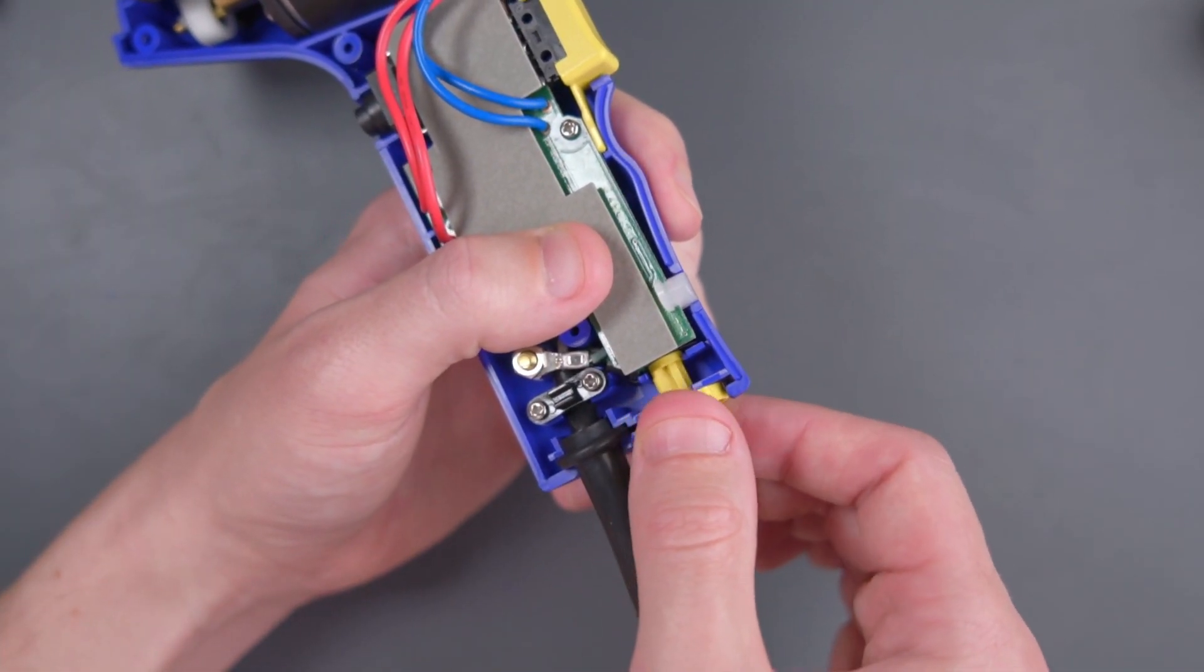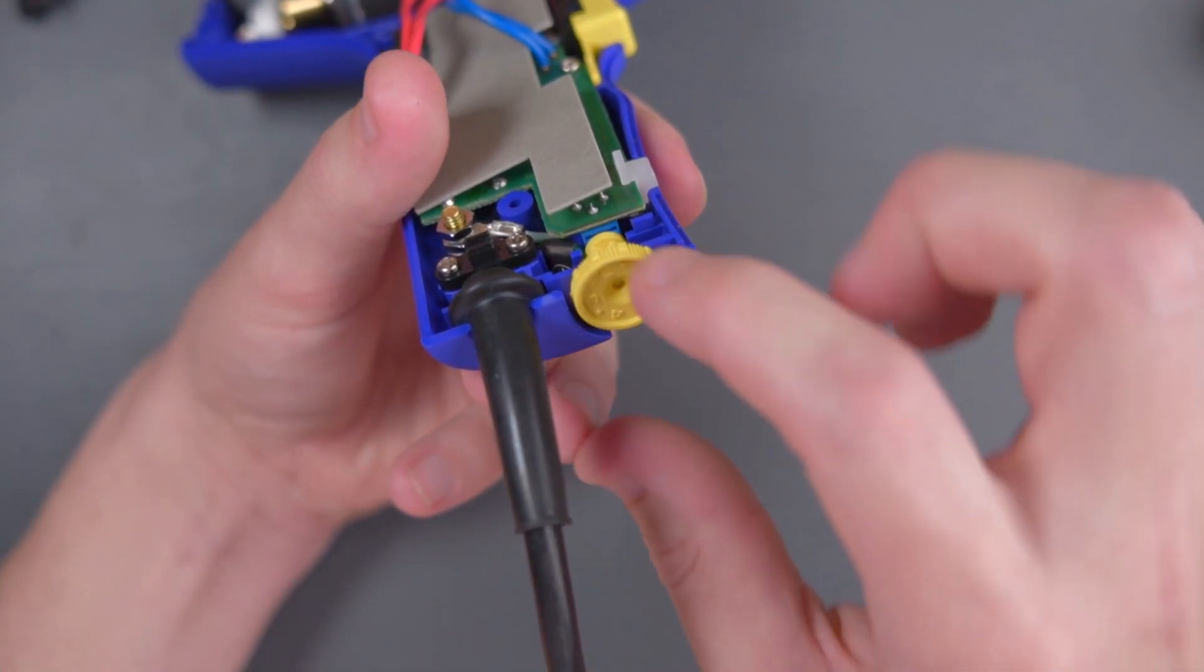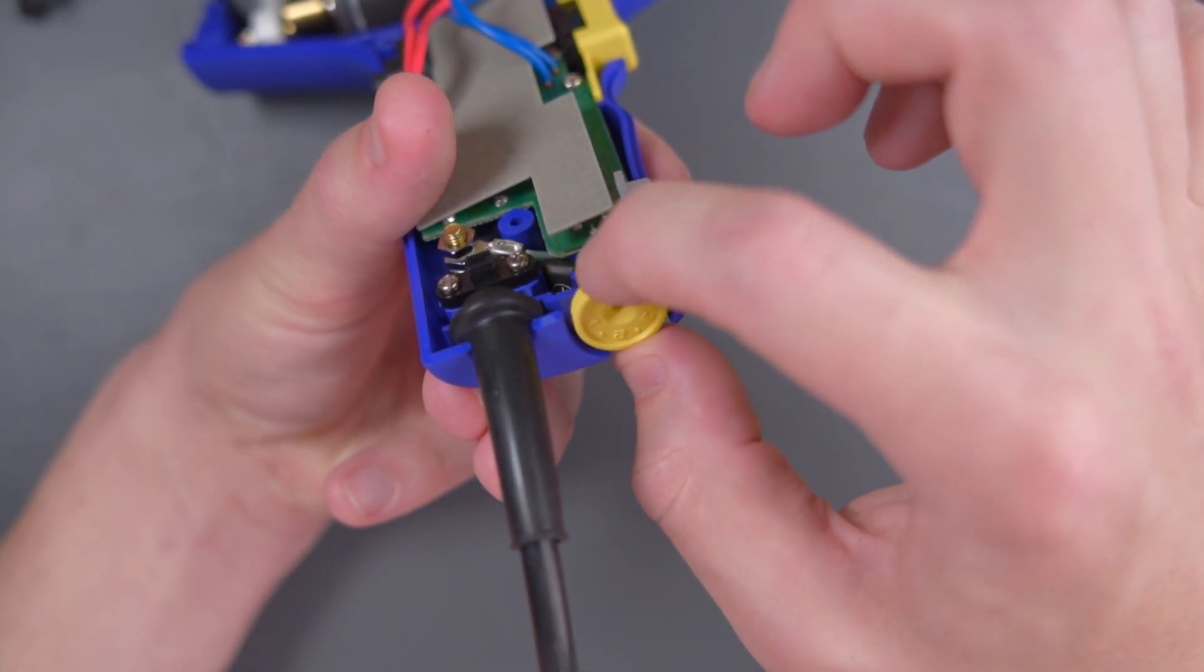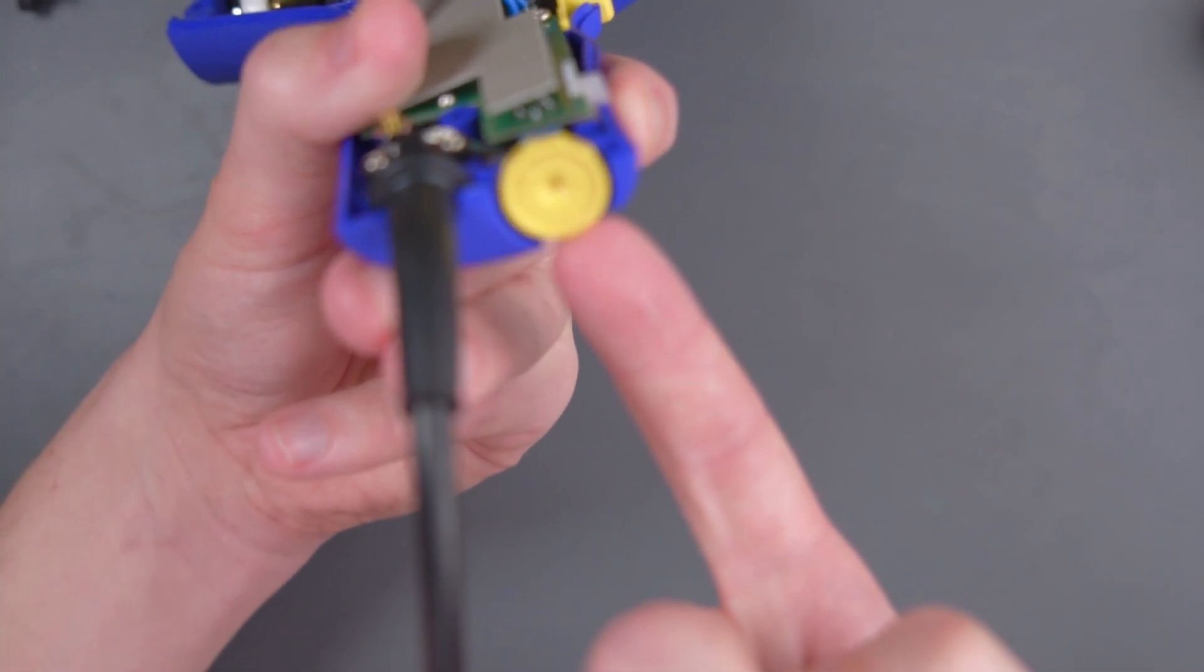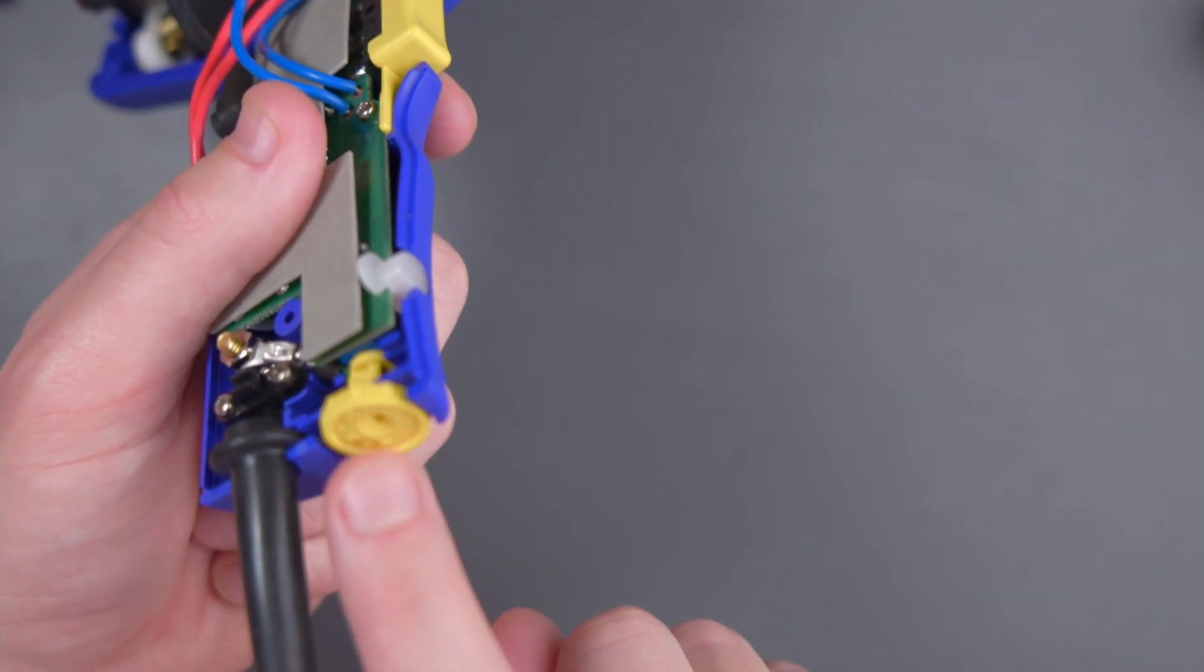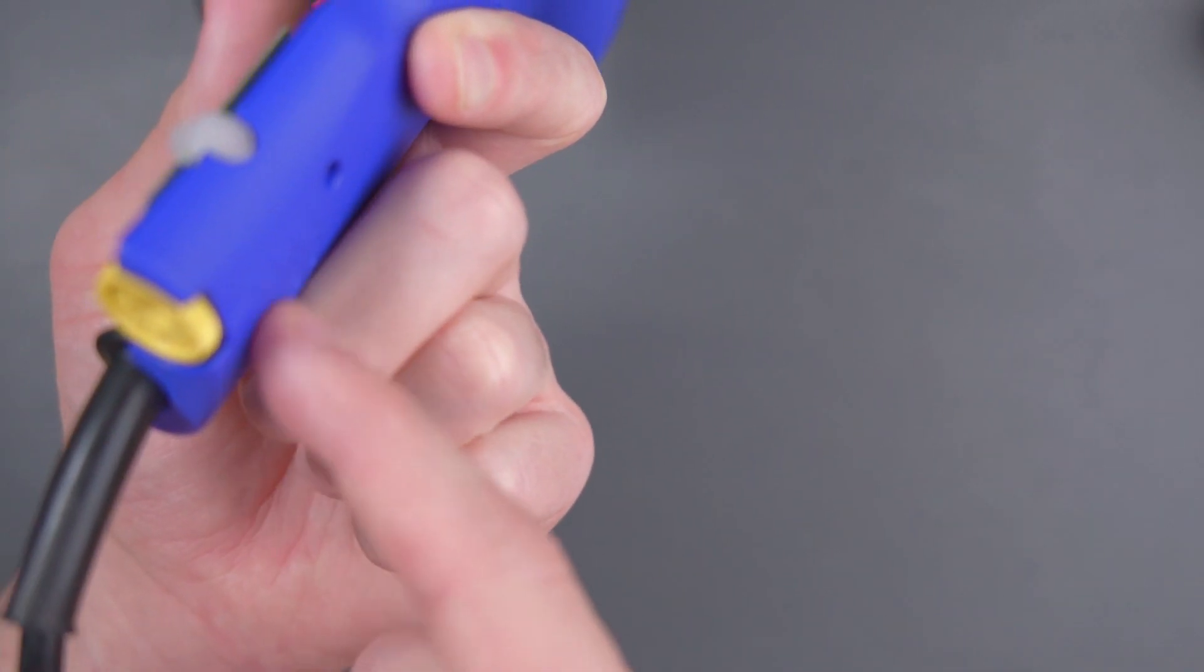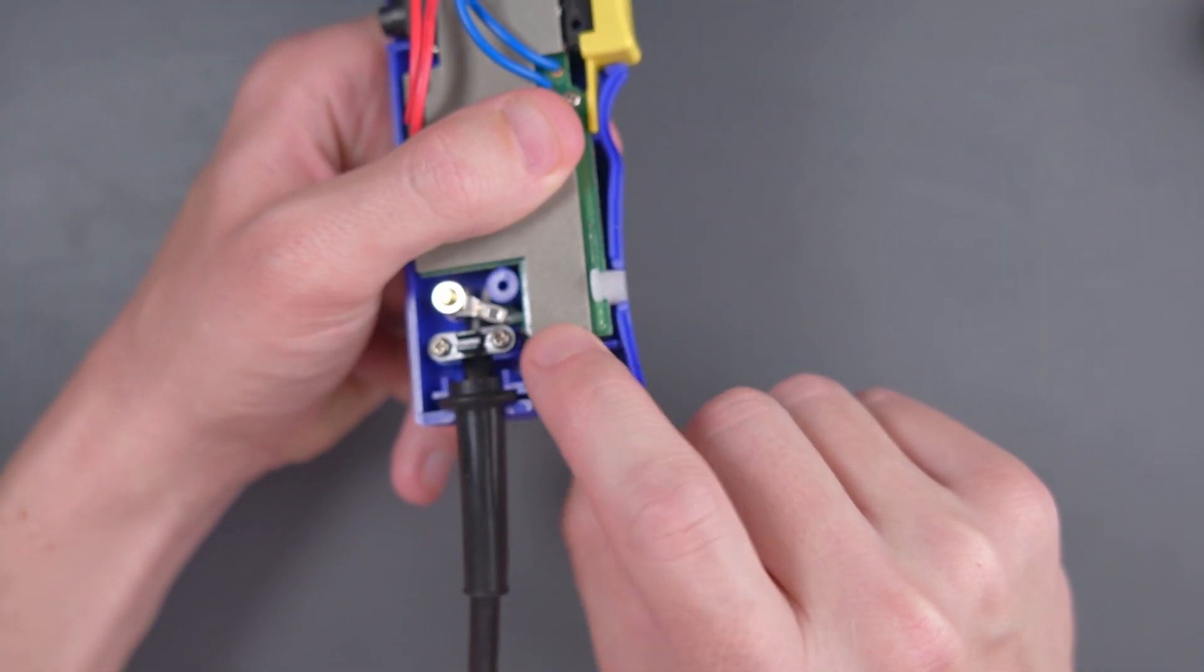You can turn it all the way one direction, and then try to turn it back the other direction. You want to make sure that the numbers on the dial are always visible on this bottom side here. If the numbers are visible from the side with the temperature markings, then you know you have this potentiometer on the right way.